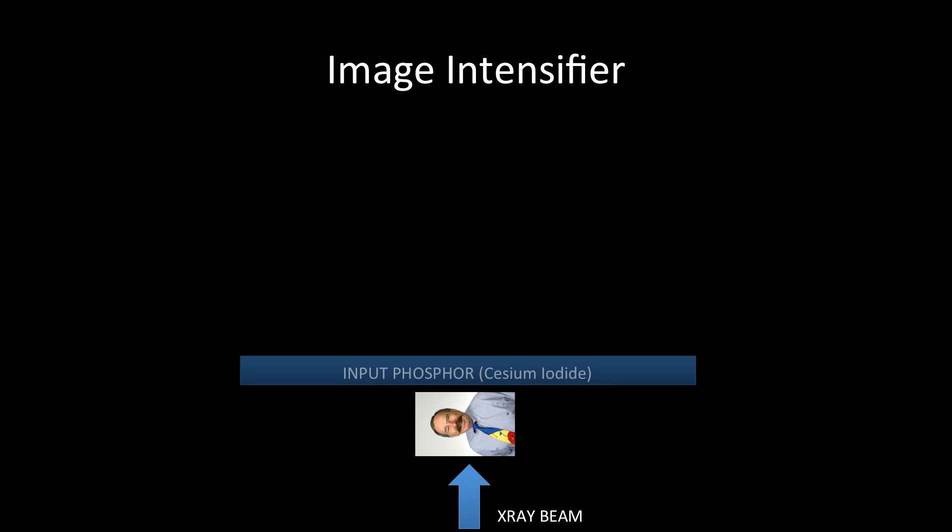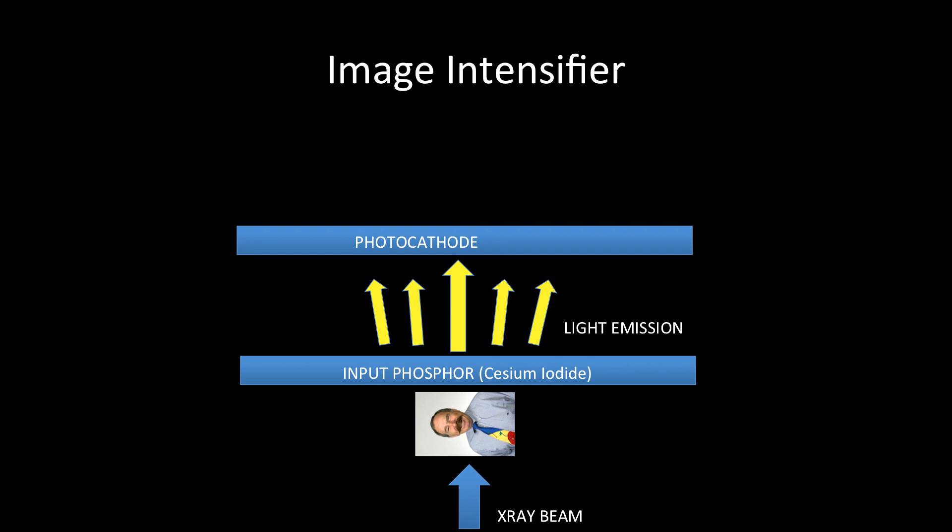Then we have the first layer of the image intensifier tube, and that's the input phosphor. It is made of cesium iodide. This generates light photons. Then the light photons will hit the photocathode. At the photocathode we have the photoelectric effect, and this means we will convert the light photons to electrons. Remember, x-rays are still photons, so we went from an x-ray photon to a light photon, and then we converted that light photon to an electron by means of the photocathode.